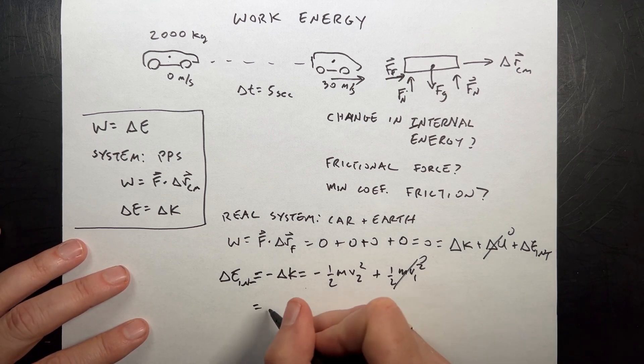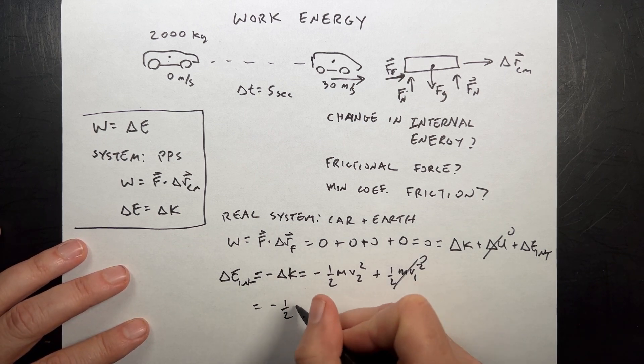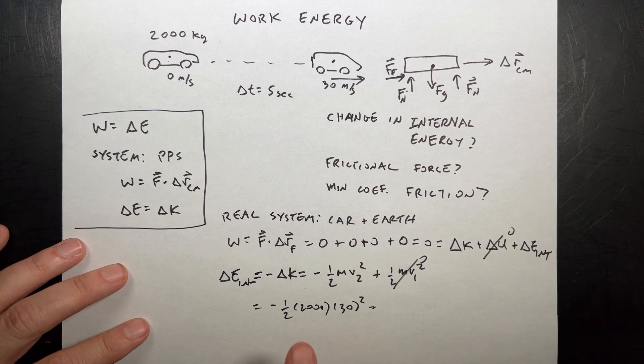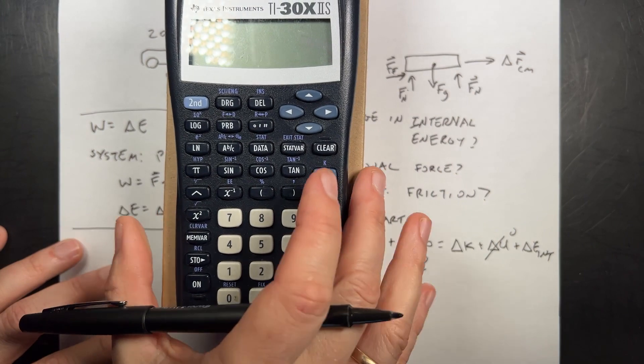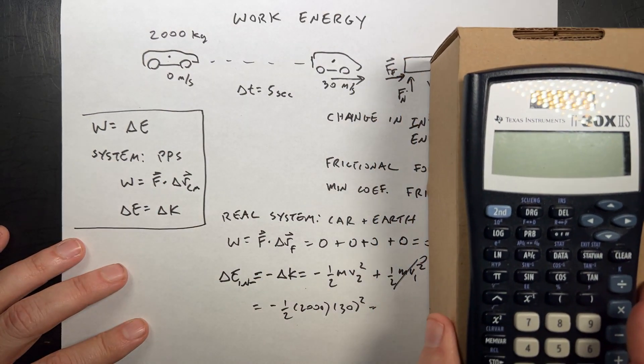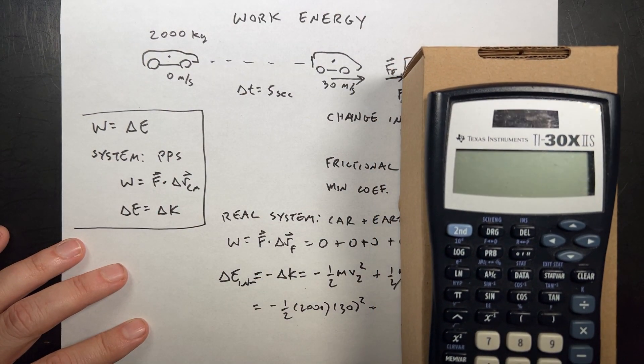Let's go ahead and get a number for that. So I'm going to get negative one-half times 2,000 times 30 squared. I'll put that in my calculator. That's a thousand, one-half times 2,000. I'm going to put it on my little calculator platform. So I need to get a good place for this.